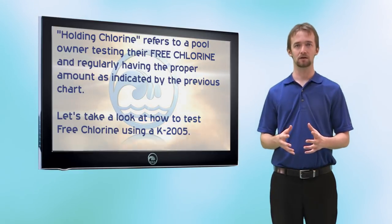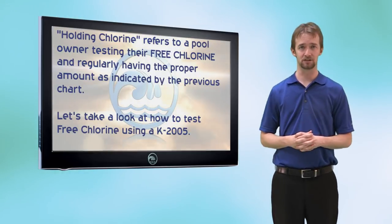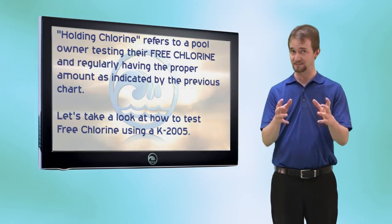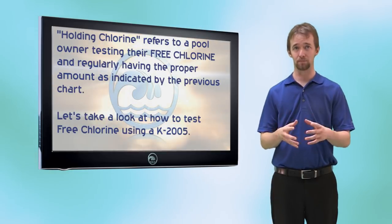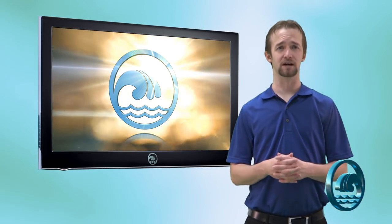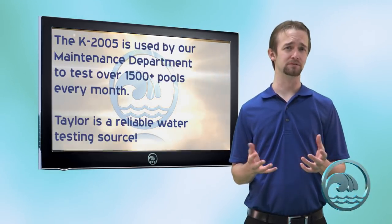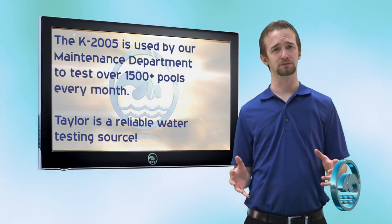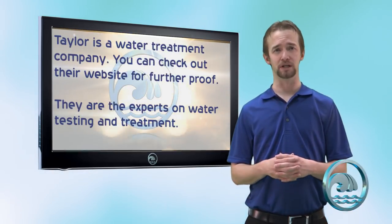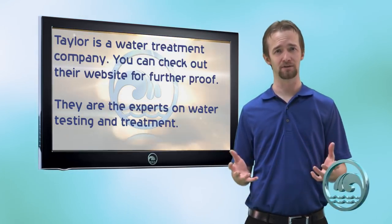Holding chlorine means you test your free chlorine and it is within the proper range as seen on that chart. Let's take a look at how to test your water for chlorine using a Taylor K-2005 test kit, which is the test kit we recommend. The Taylor K-2005 is the test kit we use on all of our maintenance routes in the field. It's very simple to use, very user-friendly, and it's made by Taylor — a water treatment company. Their test kits are more accurate and more reliable than the others on the market.